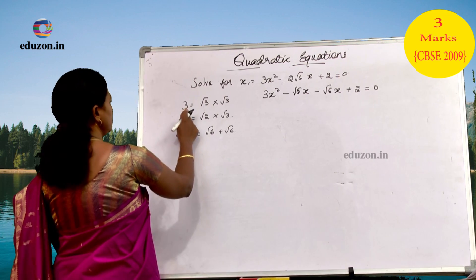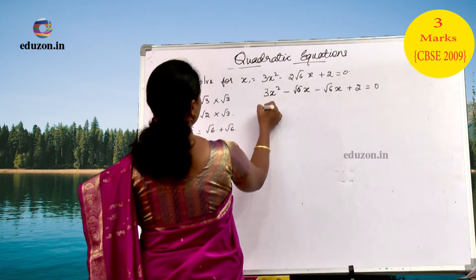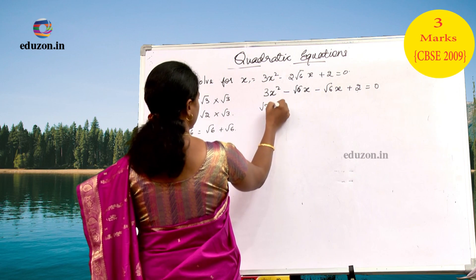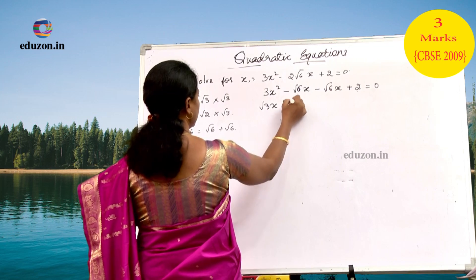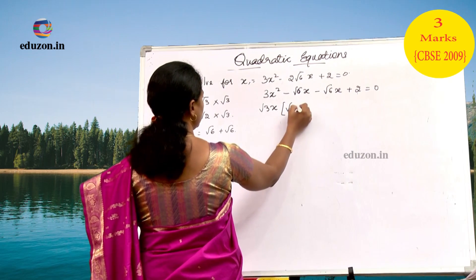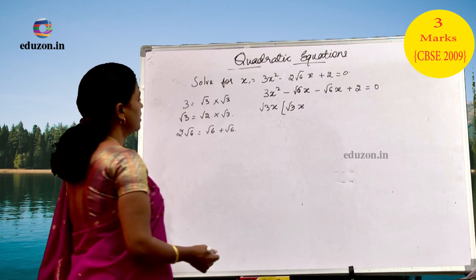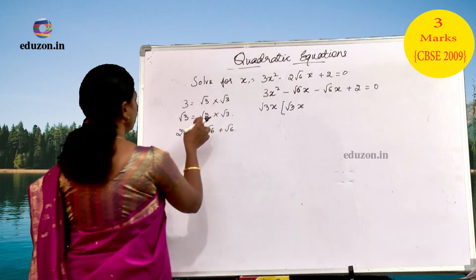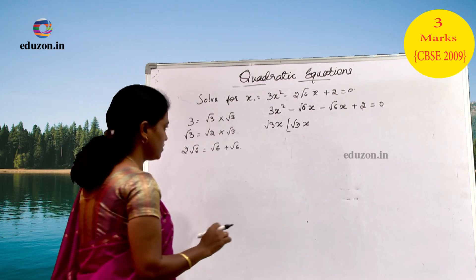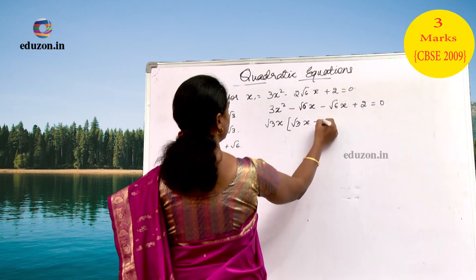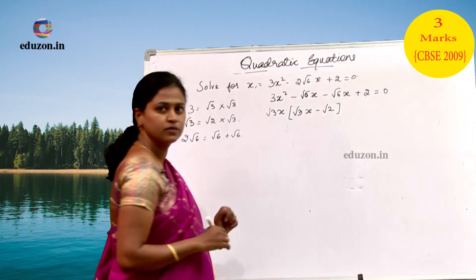Now, what is 3? 3 is equal to root 3 into root 3. So, if I take out root 3x as common, I get root 3 into x. From root 6, I have taken out root 3 as common, so what is left? Root 2 is left. So I write it down minus root 2.